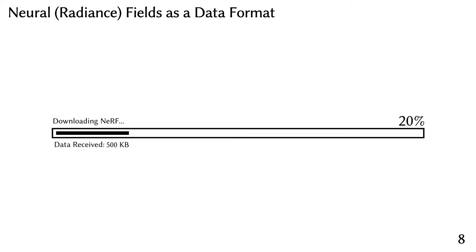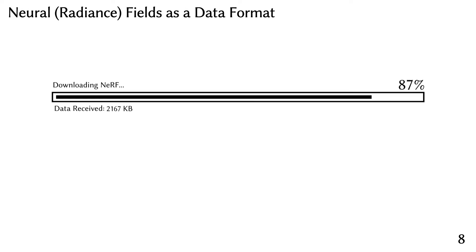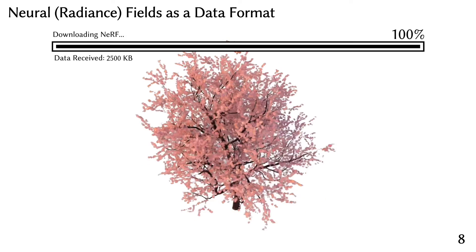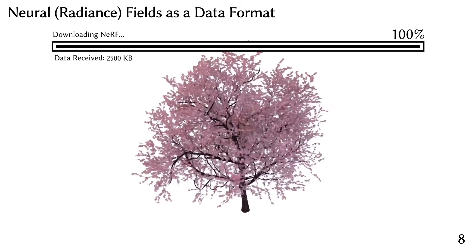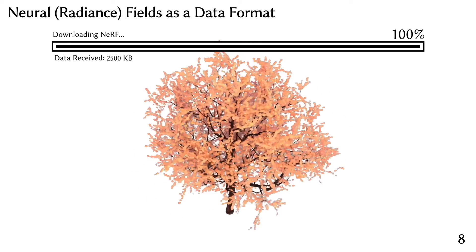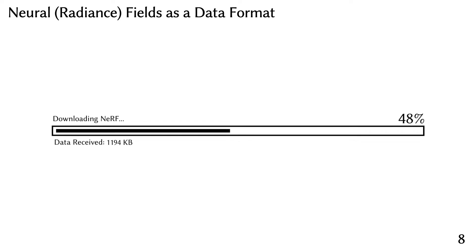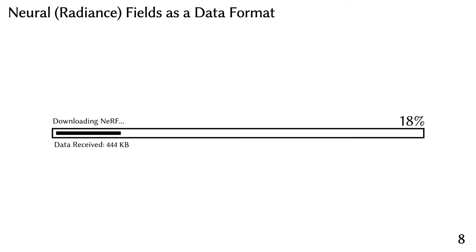Neural radiance fields seem very promising as a first-order data representation for 3D information, but there are a couple of problems. First, they can be relatively large in memory footprint and perhaps more crucially, they are also slow to render.